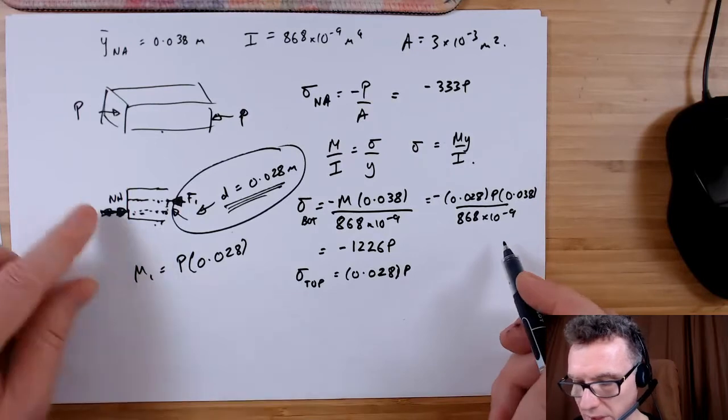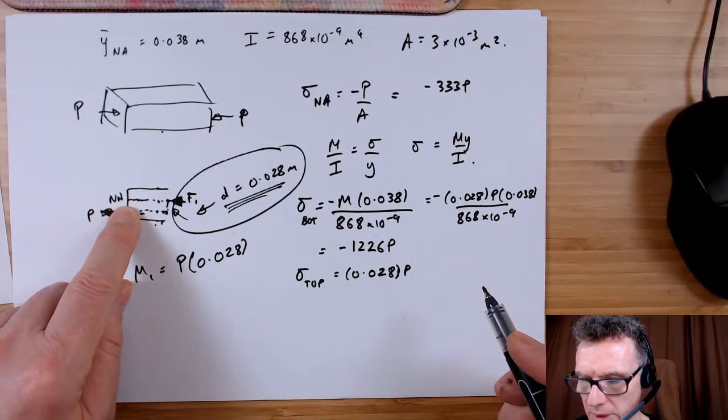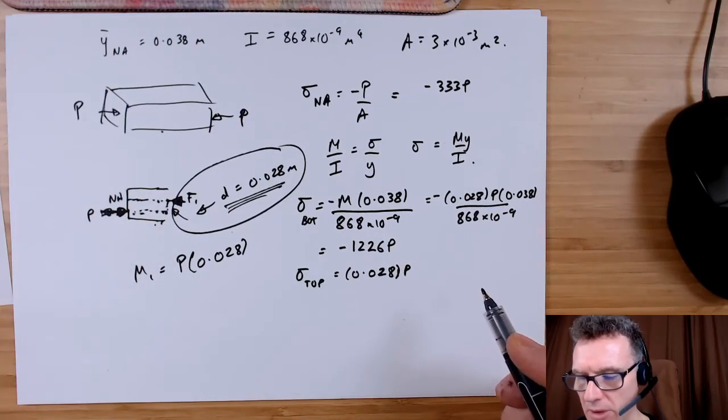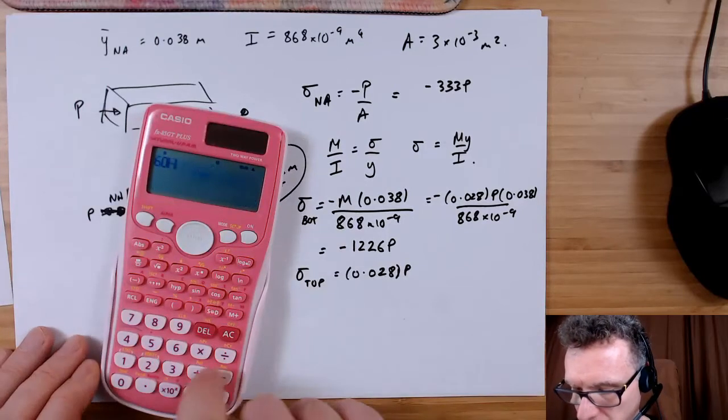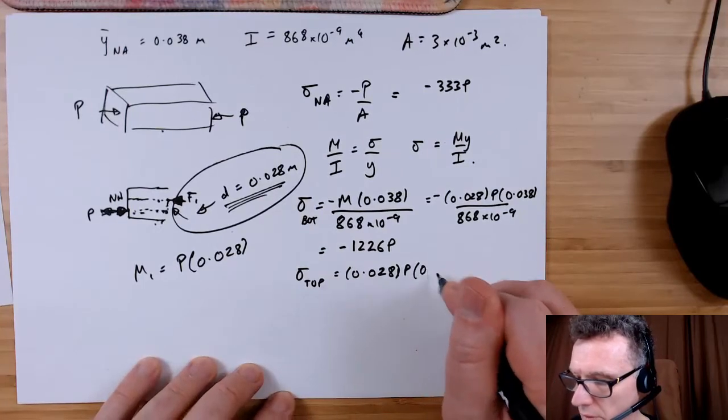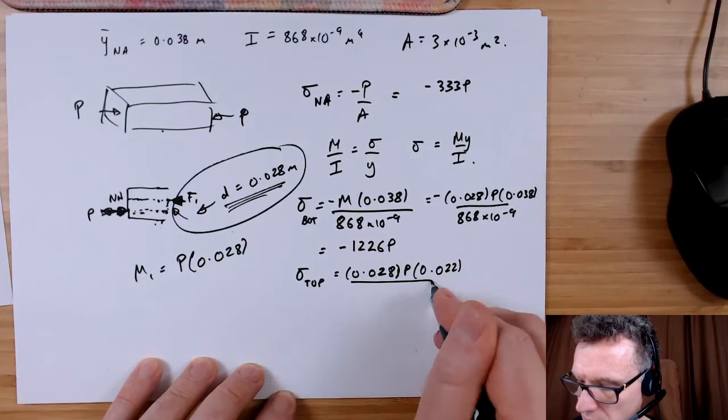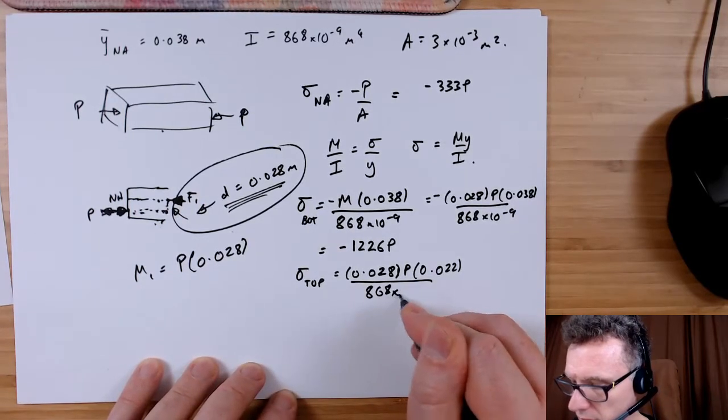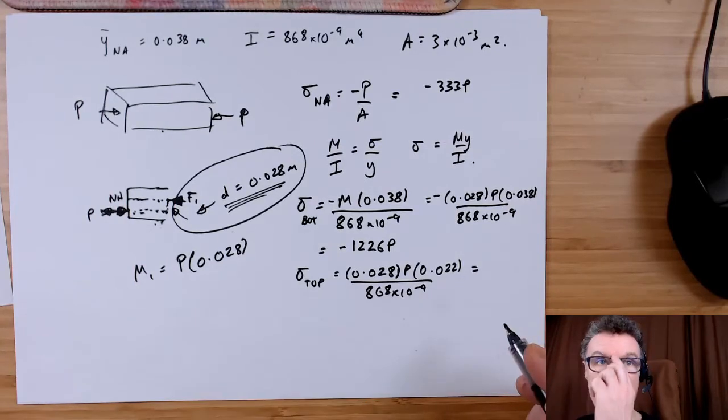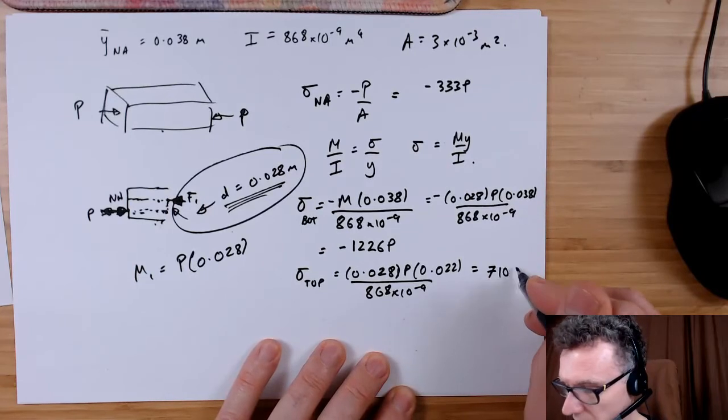I can't remember, 60 take away 38, so it's 22 to get to the top from the neutral axis, 0.022, divided by 868 times 10 to the minus 9. Put that in your calculator and I got 710 P.